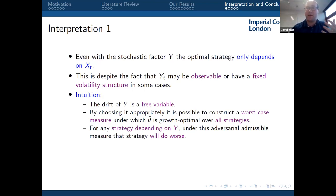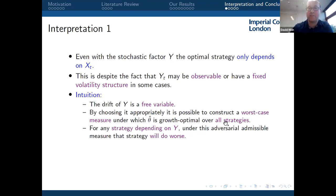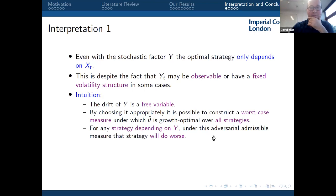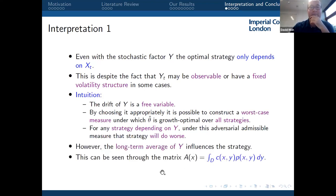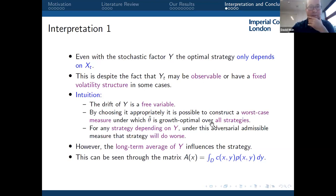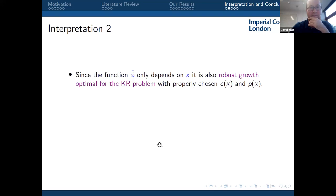The intuition for why the strategy depends only on X and not on Y: we remain robust over the drift of Y. By choosing the drift of Y appropriately, we can construct a worst-case measure under which the strategy depending only on X is actually optimal over all strategies — including those depending on the current value of Y. Under this worst-case measure, any strategy depending on Y_t will do worse than the strategy depending only on X. Y is not entirely superfluous though: its long-term average enters through the averaged matrix A.